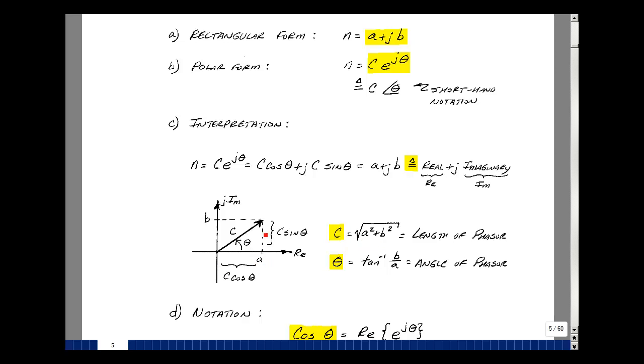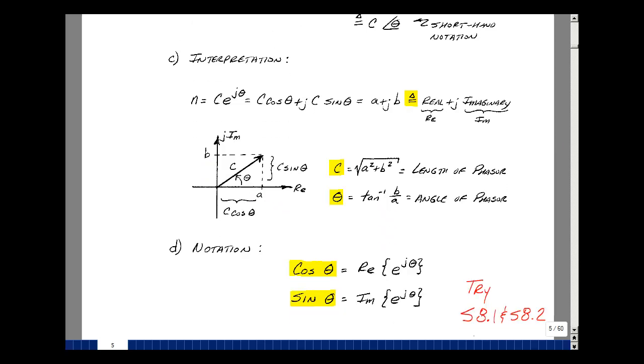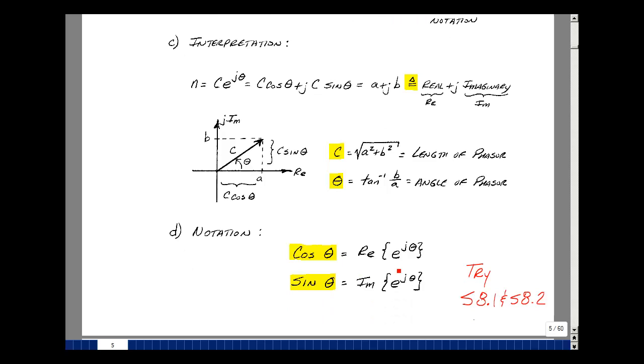In other words, the two sides that are here. The angle theta is just the arctangent of the imaginary term divided by the real term. Not the j, but the value that goes with it, so b divided by a.